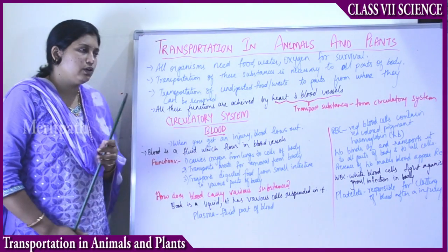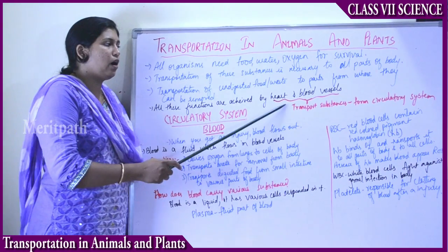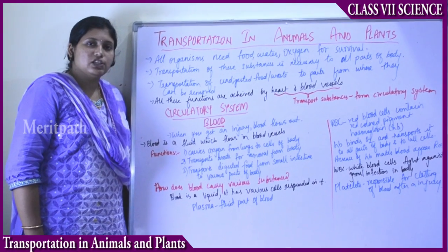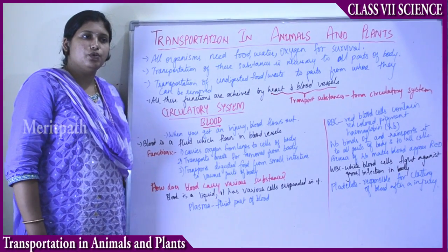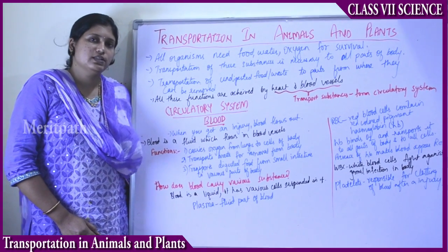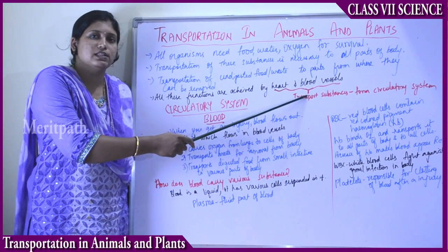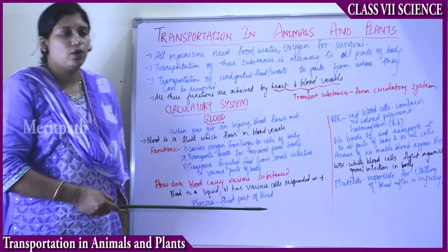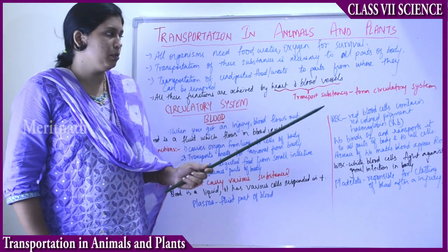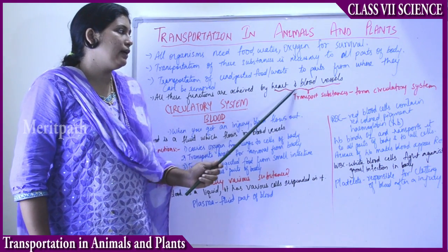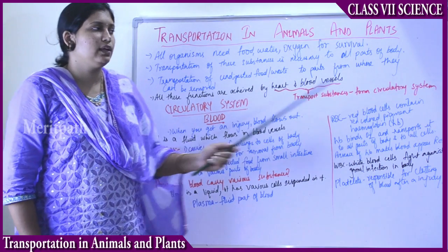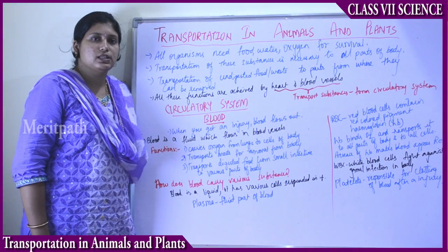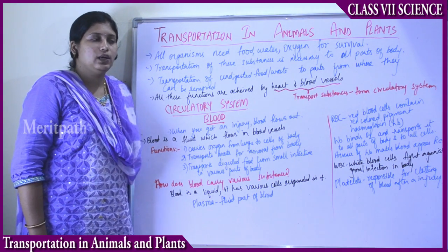All these functions are carried out with the help of heart and blood vessels. Heart and blood vessels together transport the substances in the body in both animals as well as human beings. These heart and blood vessels together constitute the circulatory system, and are responsible for the transportation of substances.